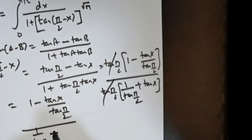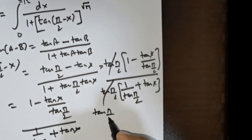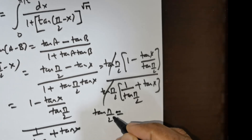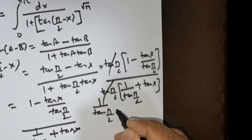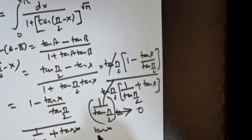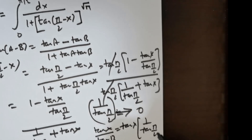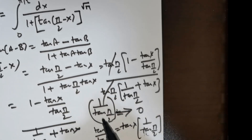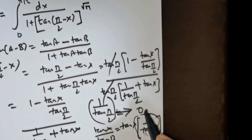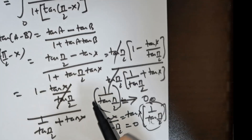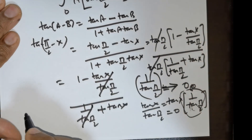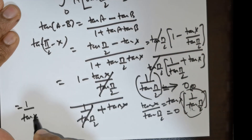Now tan(π/2) equals infinity, so 1 / tan(π/2) tends to 0. That means the term 1 / tan(π/2) vanishes in both numerator and denominator. So the numerator becomes 1, and 0 times tan x gives 0, which also vanishes, leaving us with 1 / tan x. So tan(π/2 − x) = 1 / tan x.